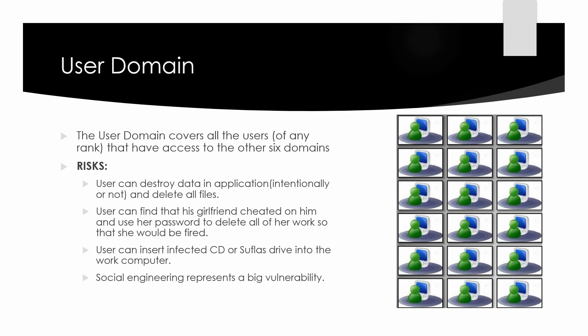The user domain covers all the users — all ranks that have access to the other seven domains. They may be users, employees, contractors, or consultants. The old phrase that a chain is only as strong as its weakest link applies to IT security too. People are often the weakest link in IT security.